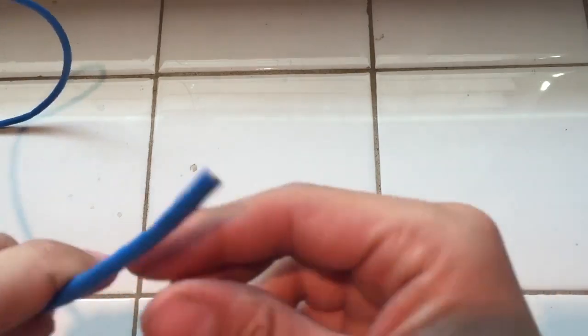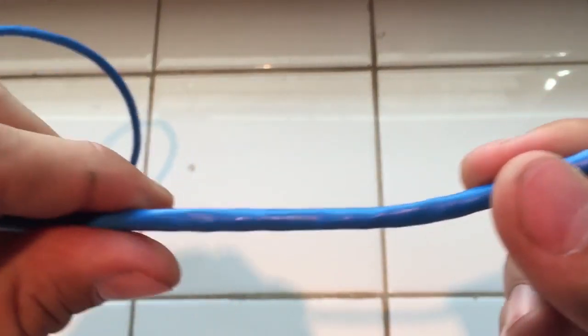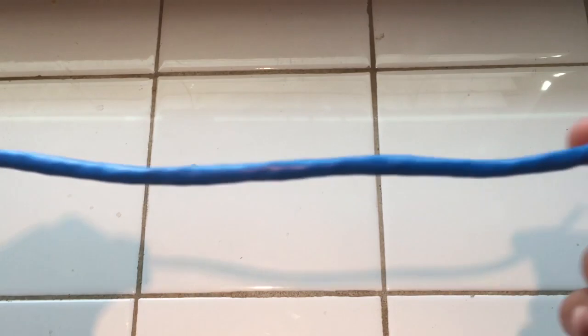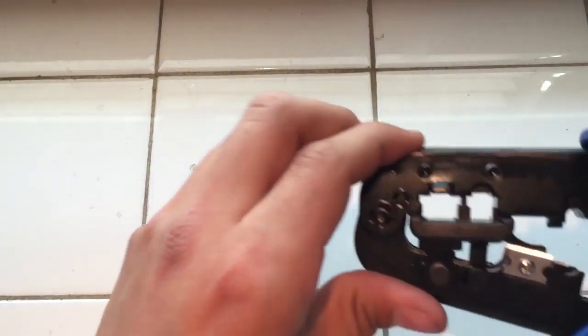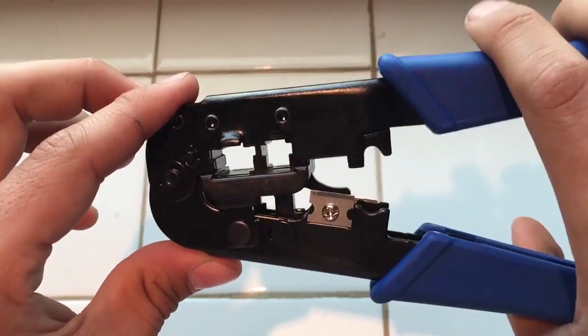You're going to need four materials. First, you're going to need your Ethernet cable. In my case, it's Cat5e. Then you're going to need your RJ45 jack. You're also going to need your crimp tool. And lastly, you need your wire strippers.